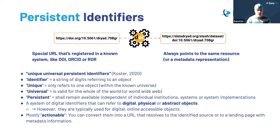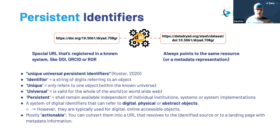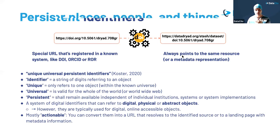A PID refers to only one object — it's an identifier, a string of digits that refers to that object. It should always be actionable and resolvable — you can put doi.org at the beginning to resolve it. There are many sorts of PIDs in the world. The three major categories are: PIDs for people, PIDs for institutions, and PIDs for research outputs.